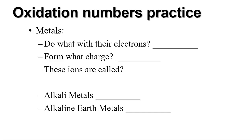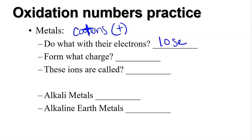Let's practice. What do metals do with their electrons? Remember, your metals create cations. If they're cations, then they're positive — think of that 'T' as a positive sign. So they tend to lose electrons, form a positive charge, and are called cations. Your alkali metals have a charge of plus one, and your alkaline earth metals have a charge of plus two.